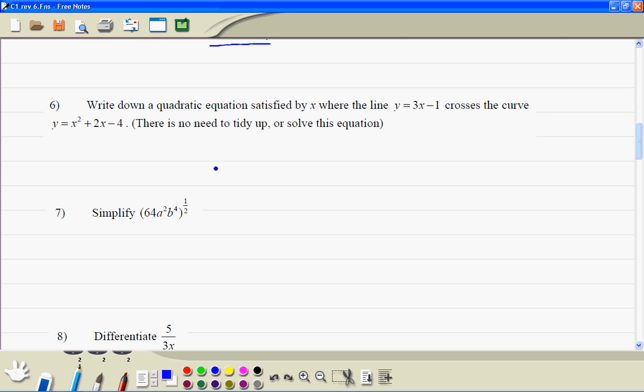Number 6, we don't need to solve it. So we got this equation is equal to y, and this equation is equal to y, just put them equal to each other. So we have x squared plus 2x minus 4 is equal to 3x minus 1.